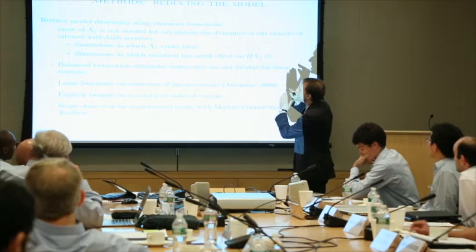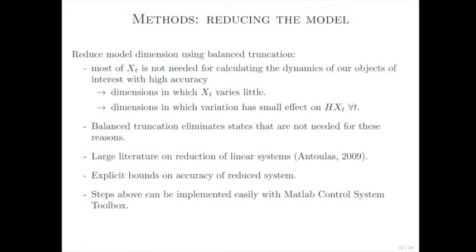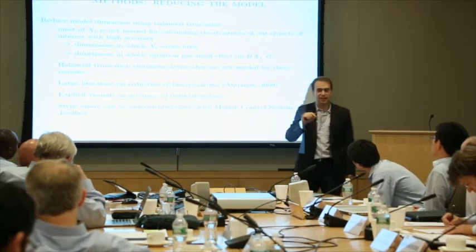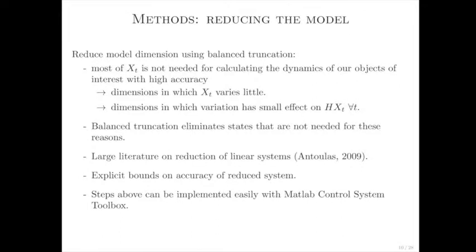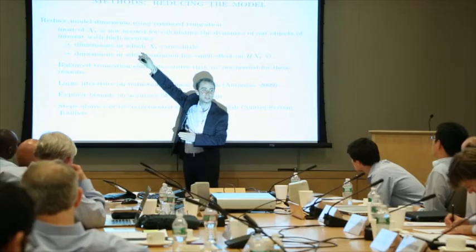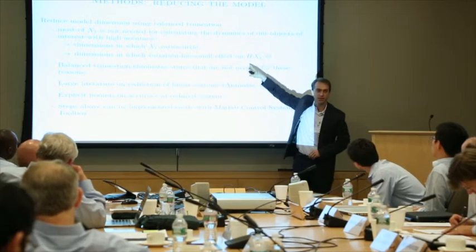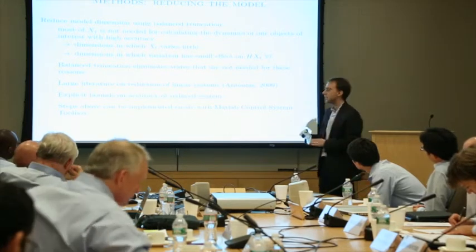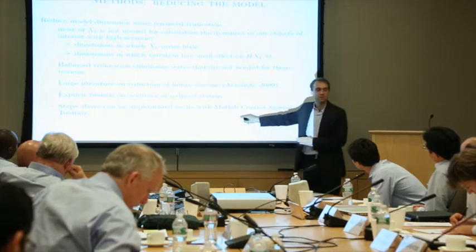The next step is to take this large system and reduce it to a scale manageable for statistical analysis. Most of this vector x is not needed to predict the dynamics of the observables — aggregate consumption, aggregate income, and so on. There are dimensions in which x varies that don't really show up in what we're observing, so we don't need to track those dimensions of the state space. Techniques from the operations research literature let you identify which dimensions to eliminate, with explicit bounds on the accuracy of these reduced systems. This is straightforward to implement with the MATLAB System Control Toolbox.